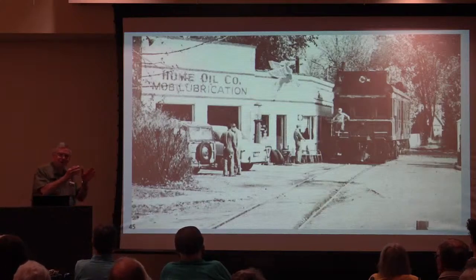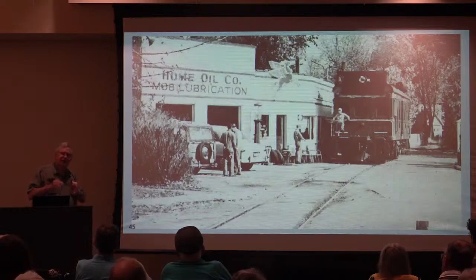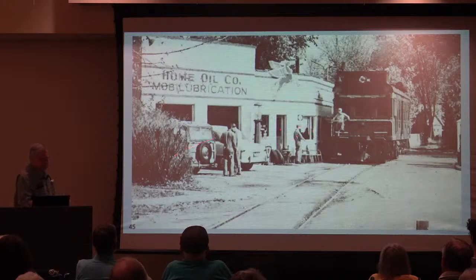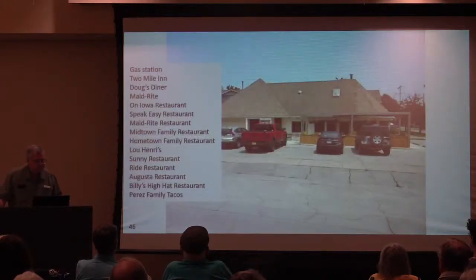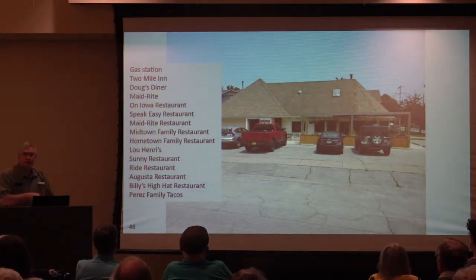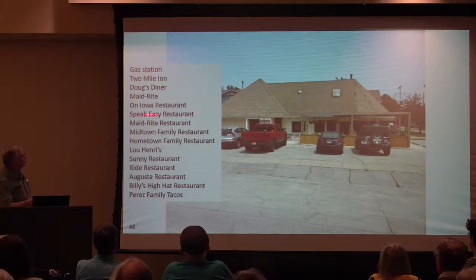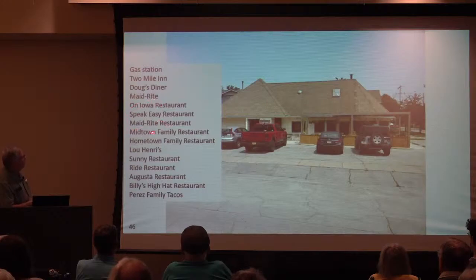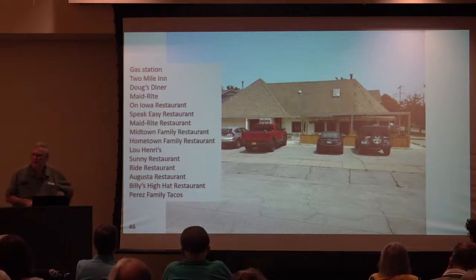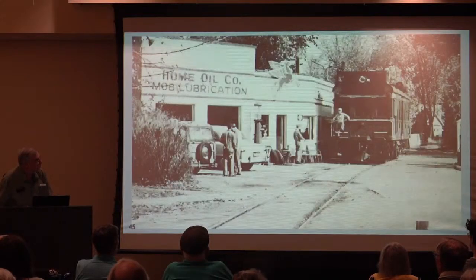Later, Doc and his wife added what they called the Two-Mile End — he being one Mile and his wife one Mile, spelled M-I-G-H-E-L-L but pronounced Mile. To take you down memory lane, here's a list of all the different restaurants at that location — speakeasy, Doug's Diner, Lou Henry's, and others that lasted very short periods. Just look how close the railroad car came to the building.